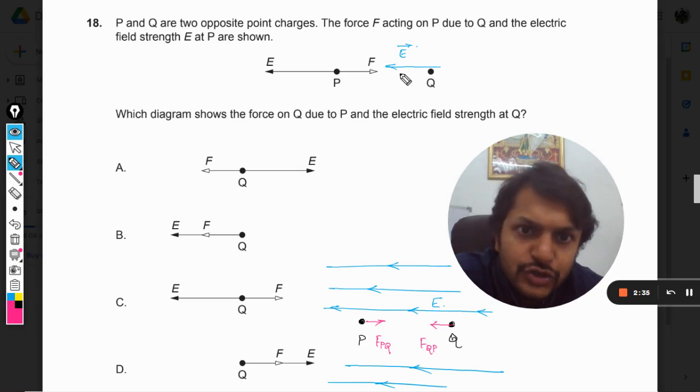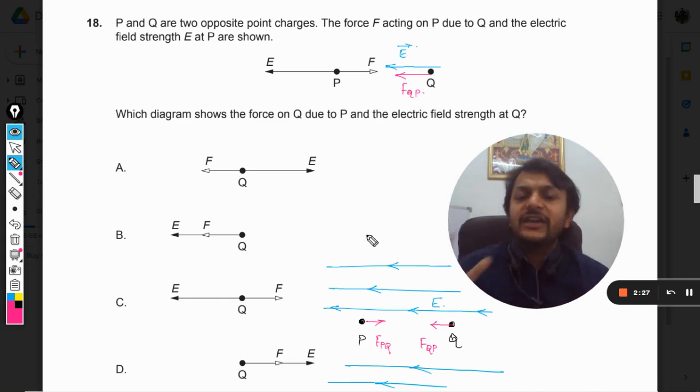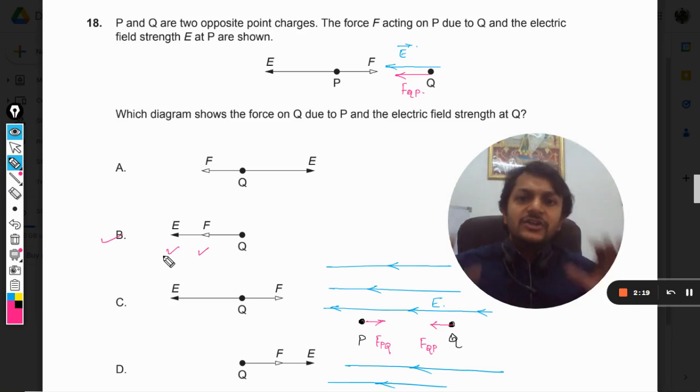And the force on Q because of P, that will also be in this direction. So then now we are checking our options here. So B is the only such option in which E and F are in the same direction, that is towards left. So this is how we do this question.